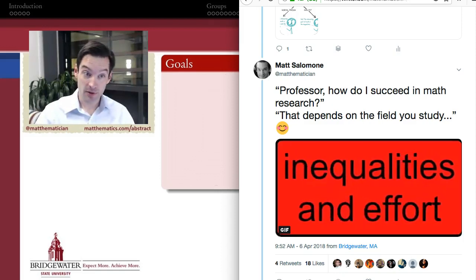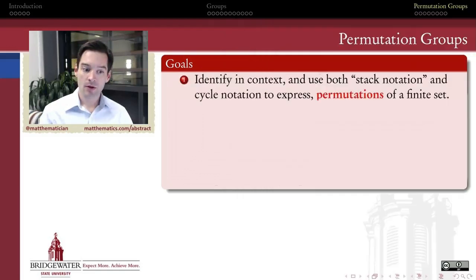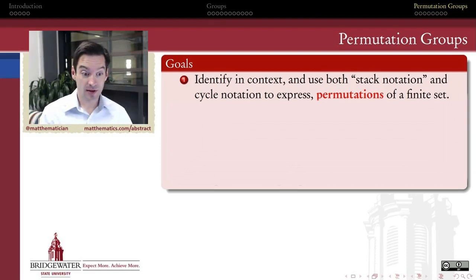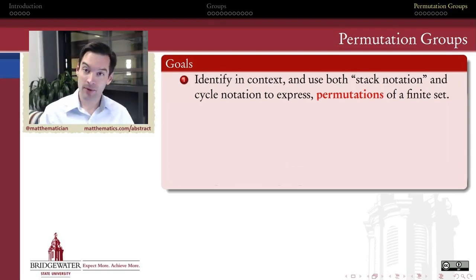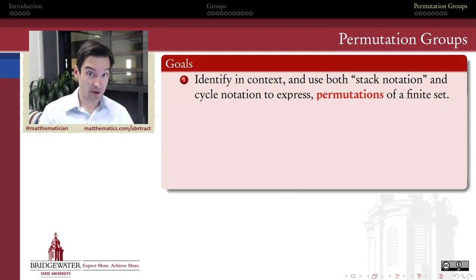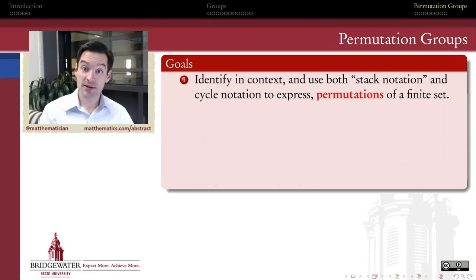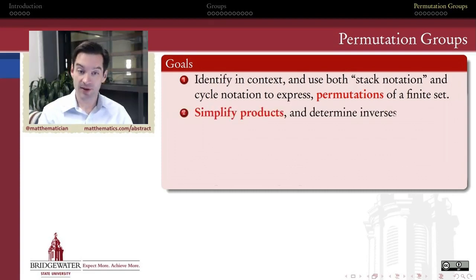So what are our goals going to be over the next few videos? First, we'll provide some motivation for what permutations are — what are some of the various ways in which they arise in mathematics? We've already seen one: the anagrams example. We're also going to need to figure out how to use notation — two different kinds: what I call stack notation, and also cycle notation — to express and work with permutations of a finite set.